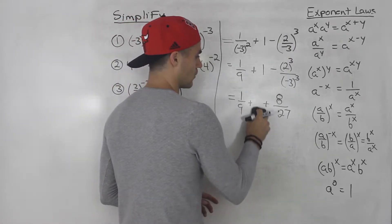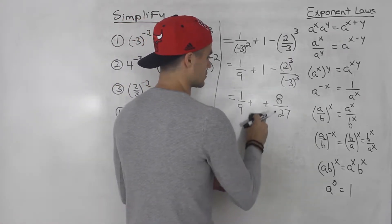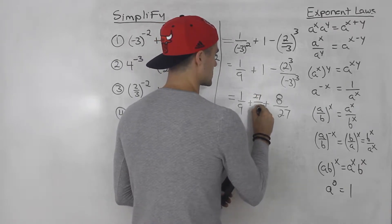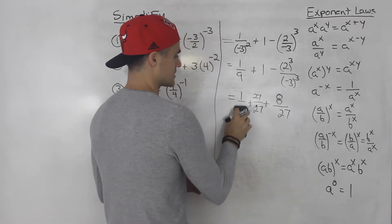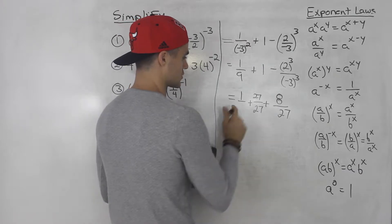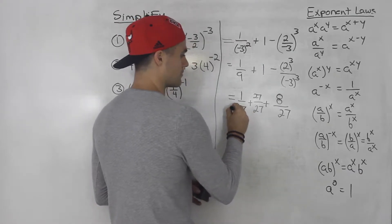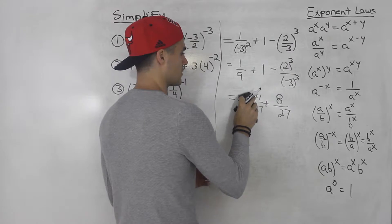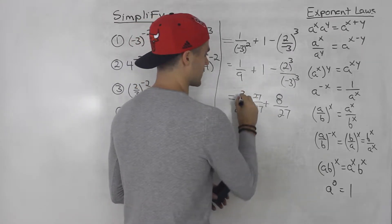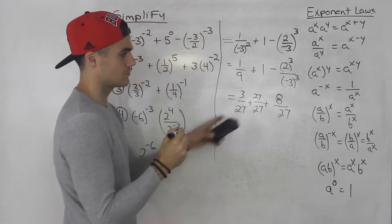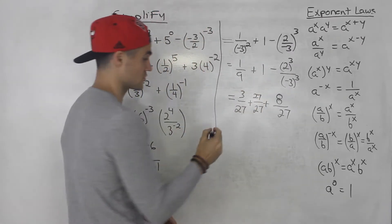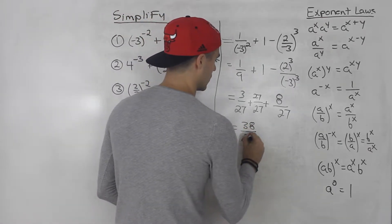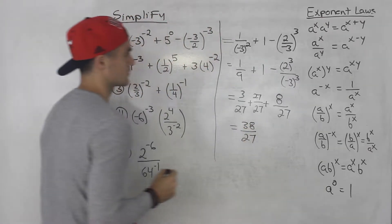So this one over one we change to 27 over 27. For one over nine, we multiply the nine by three to get 27, so we multiply the top by three as well. So we got three plus 27, which is 30, plus eight, which is 38. This ends up being 38 over 27.